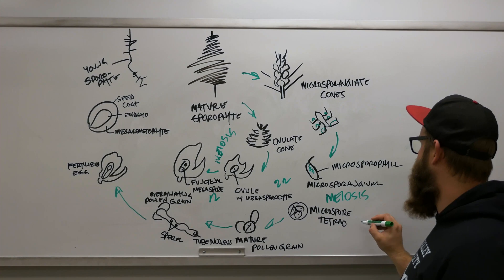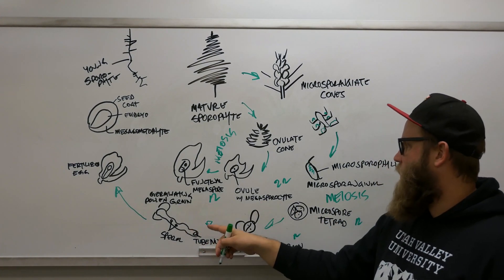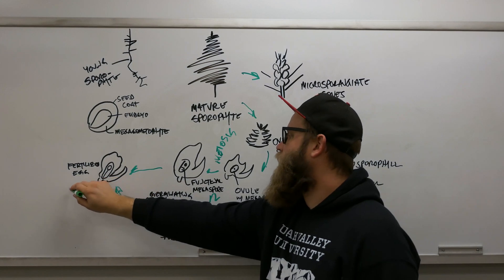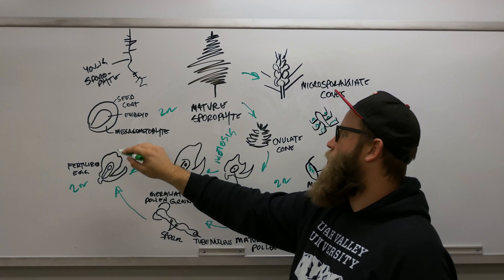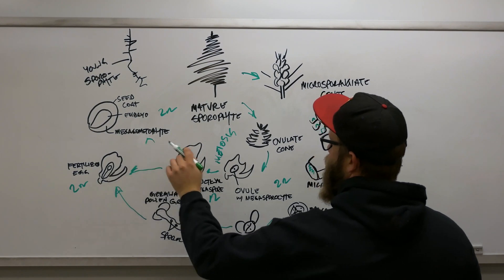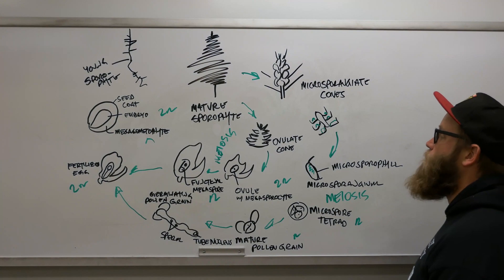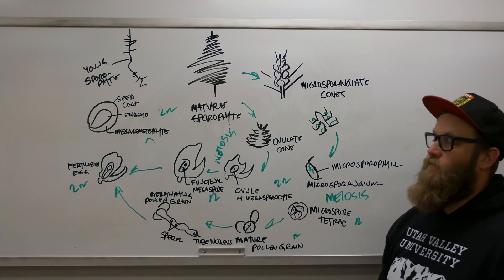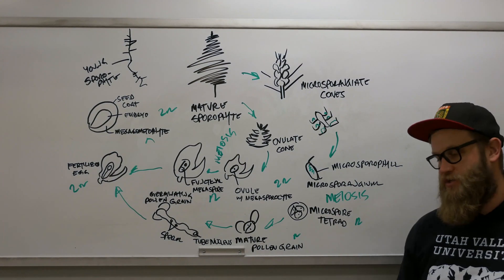We have fertilization, and so this zygote is 2n and the embryo here is 2n. But again, like when we were working with those cycads, this part of the tissue, the megagametophyte tissue that's between the seed coat and the embryo, that is n. Then those grow into a young sporophyte and finally into our large tree that again is going to produce these female ovulate and male microsporangia cones.